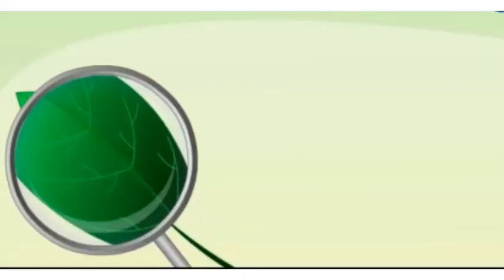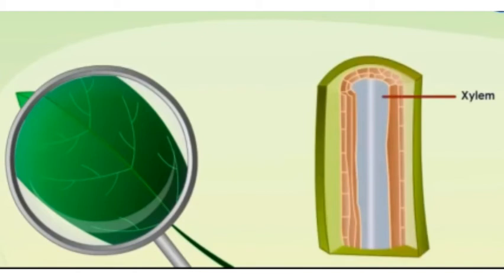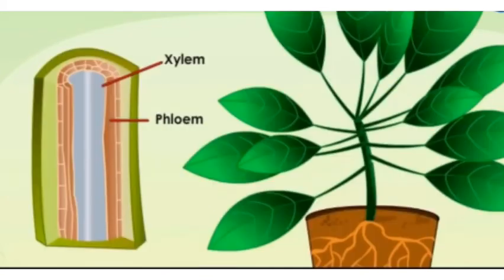What are these? Yes, veins. Xylem and phloem are found as a bundle together. As these tissues help in the transport of water and food, they are called vascular tissues. In this bundle, xylem is in the center and phloem is towards the outer side.